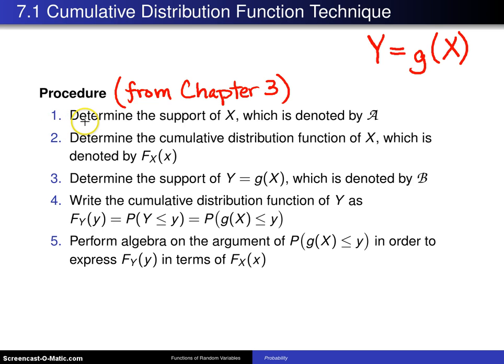Step one is to find the support of the random variable x, which is denoted by script A.